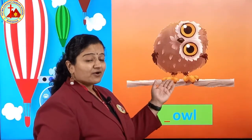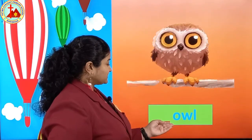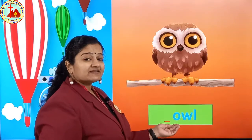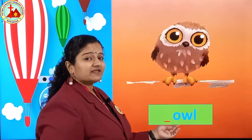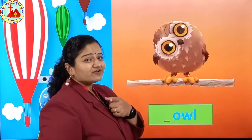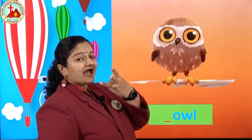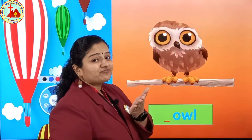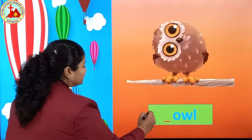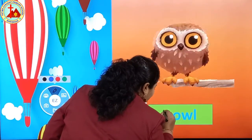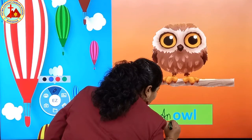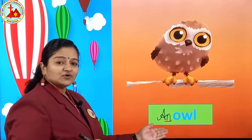Picture of owl. Owl spelling starts with O, W, L. First letter is O. O is a vowel. Then before vowel what you have to put? AN. Write AN: an owl.